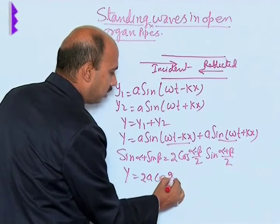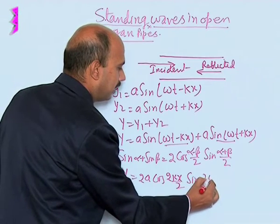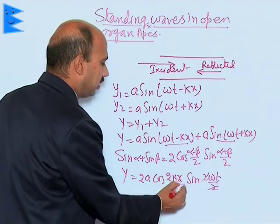We will be getting 2kx/2 and sin, we will be getting 2ωt/2. This will get cancelled.